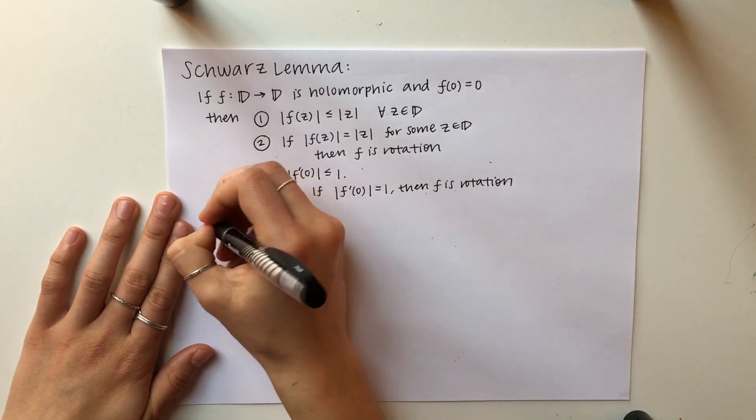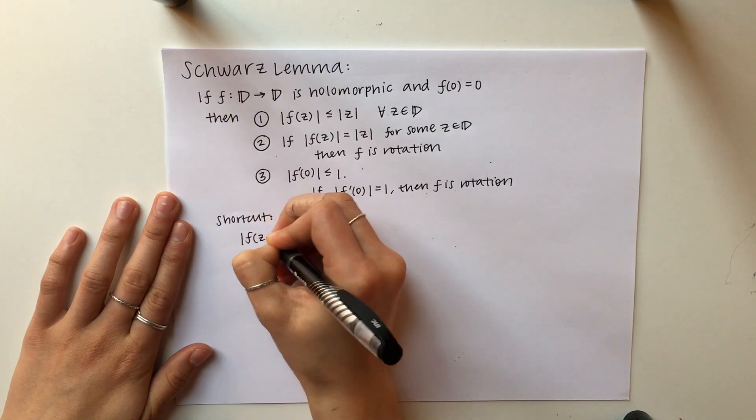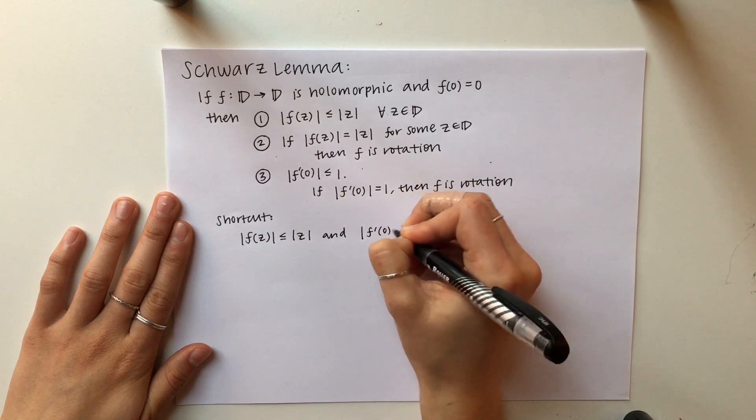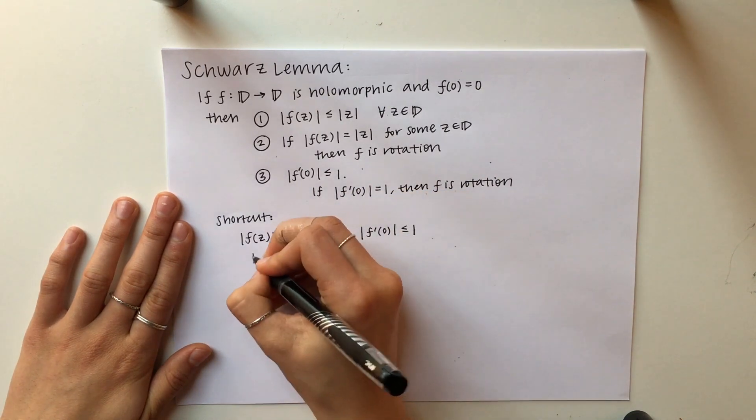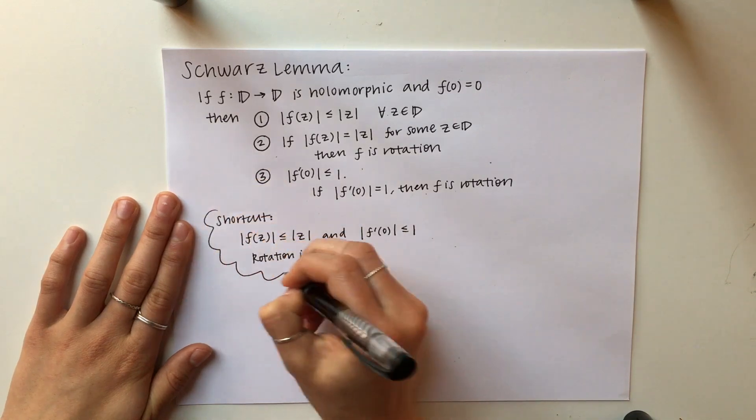The kind of shortcut quick way I like to think of this theorem is that we have two different bounds and two different ways to express a rotation. The two bounds are that F of Z is bounded by Z and the derivative at zero is bounded by one, and we have a rotation if either of those are equal.